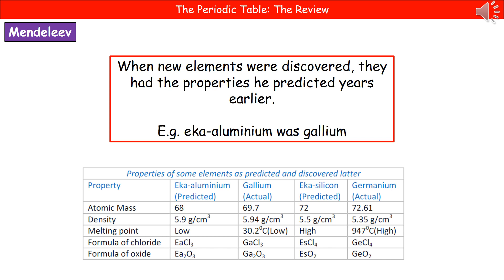If we look at the first two columns — eka-aluminium, which is the predicted, and gallium, which is the real element we now know — the atomic mass was only 1.7 out, which is pretty good when you don't know much about the structures. The density was incredibly close: 5.9 compared to 5.94.